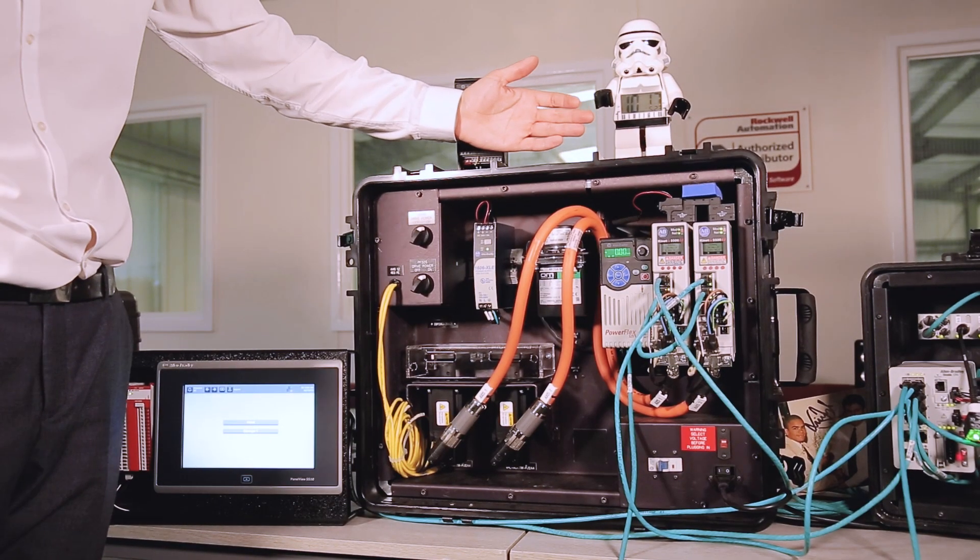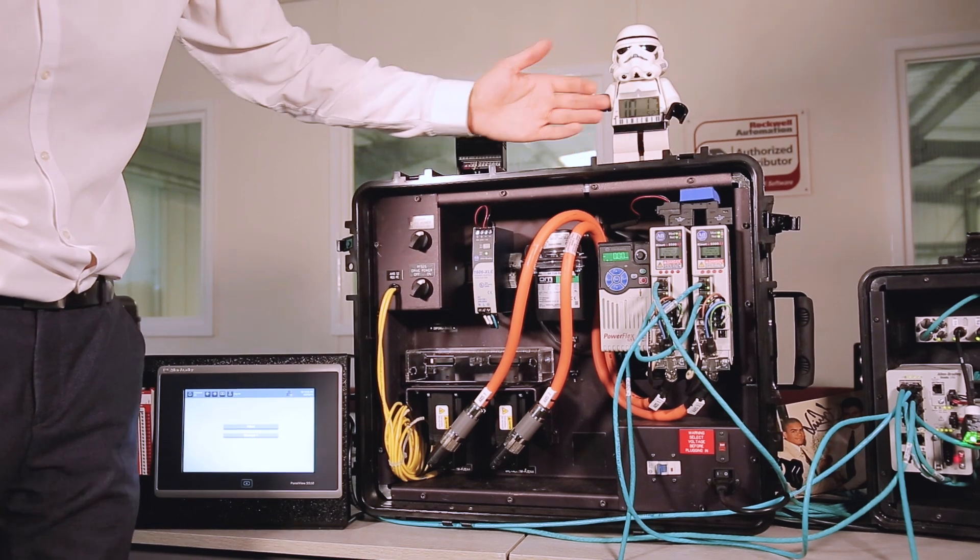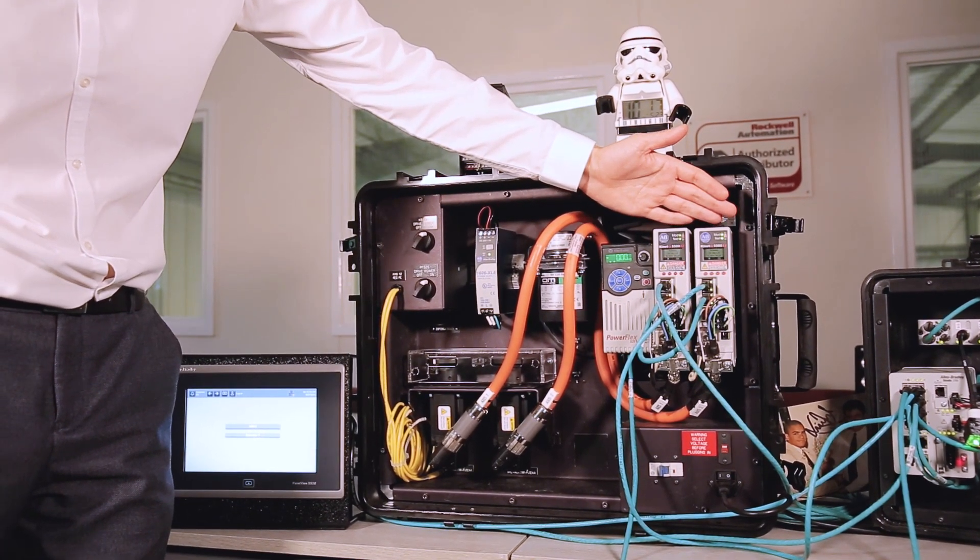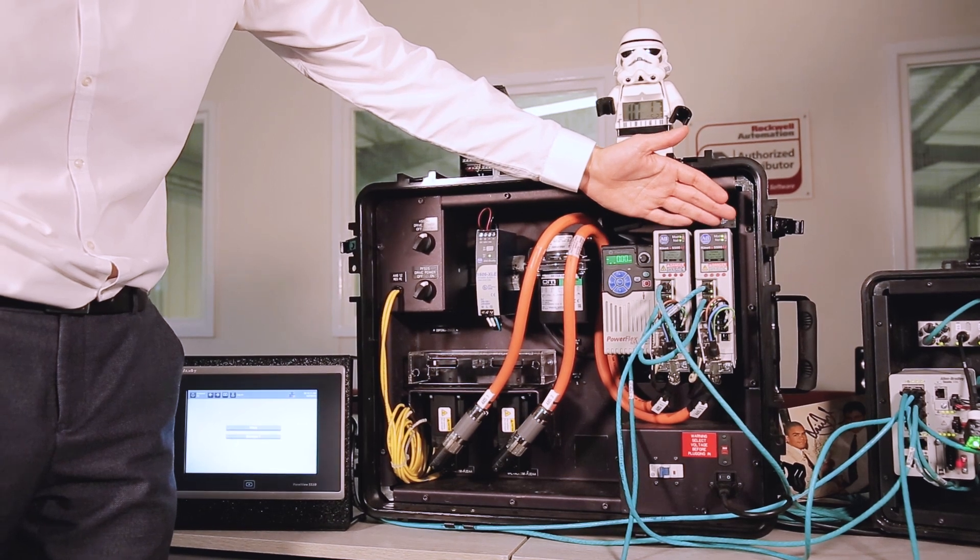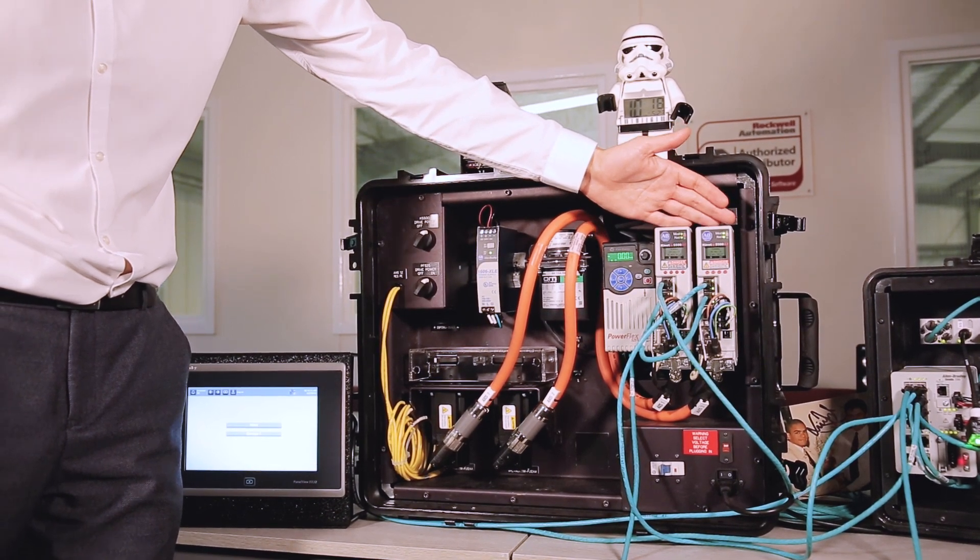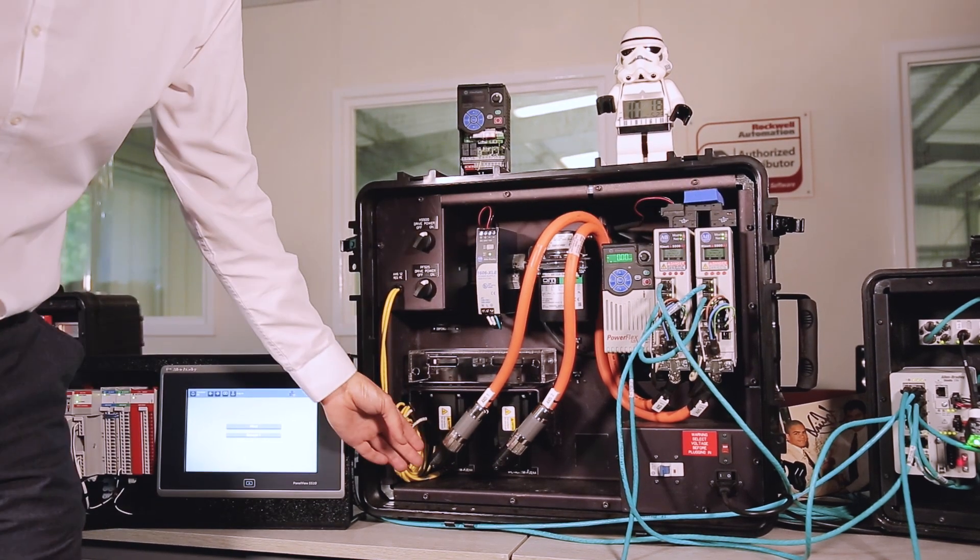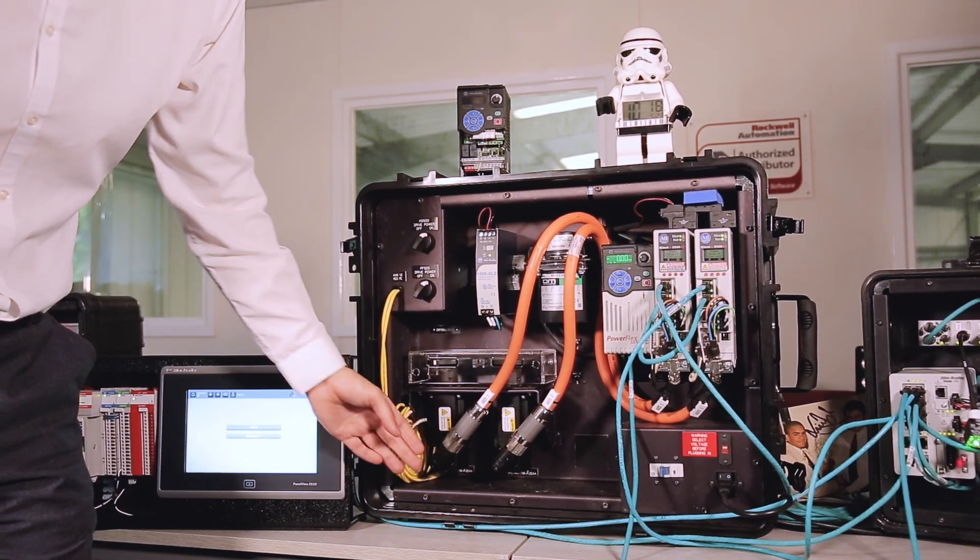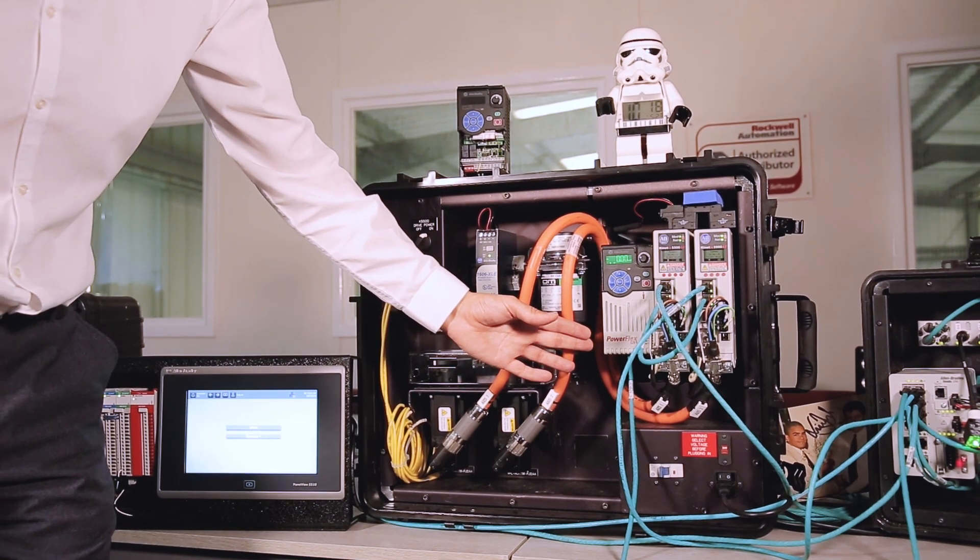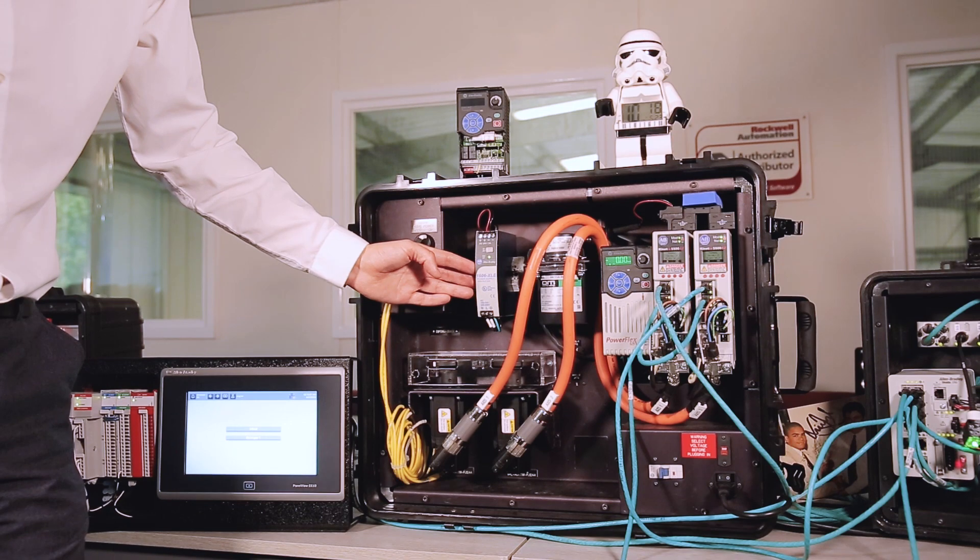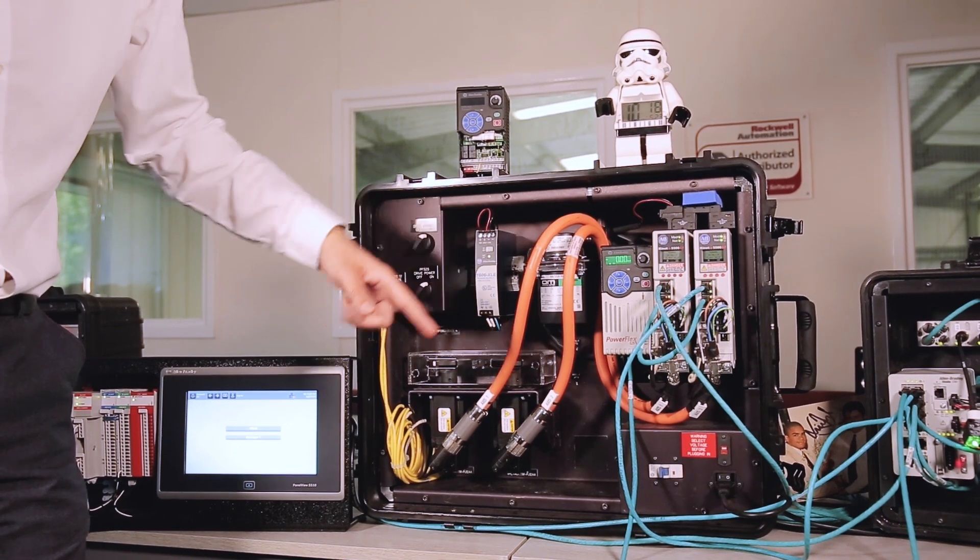And what we've got here is our integrated drivers of motion demonstration case, which includes the Kinetics 5500 servo motors with inbuilt safe torque off, which is available either as a hardwire or PLE SIP safety over ethernet. And that's powering a pair of VPL servo motors. We've got a PowerFlex 525 with integrated safe torque off and ethernet, powering a small motor. And obviously most importantly the power supply, because without that, without 24 volts, none of this is going to work.